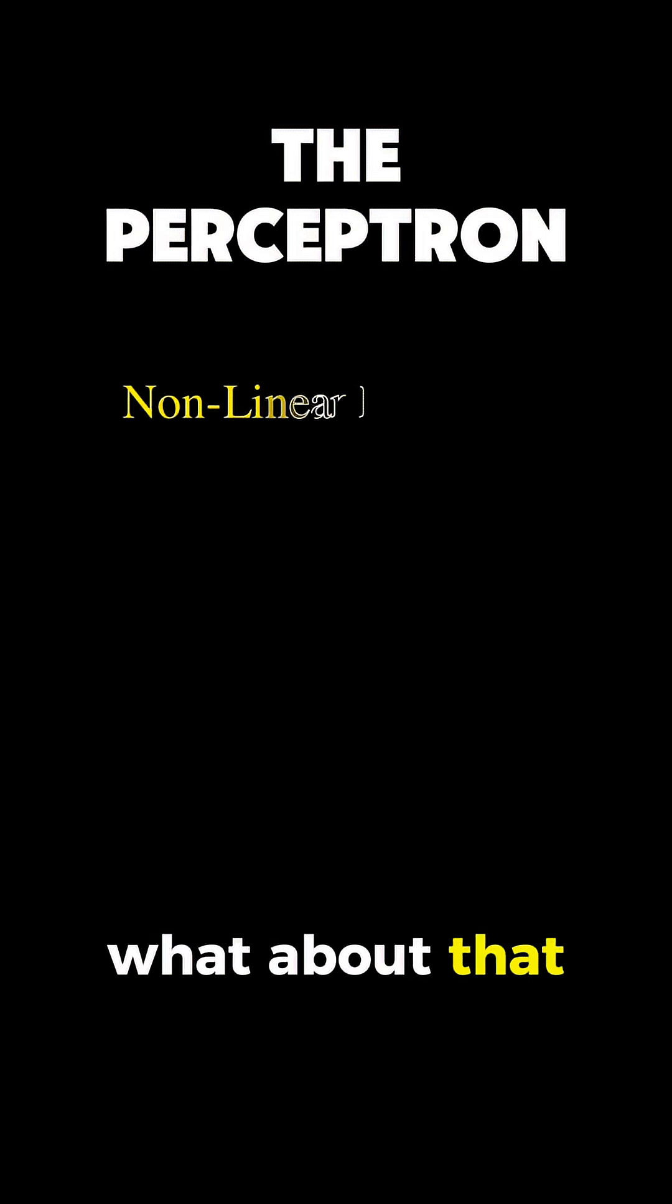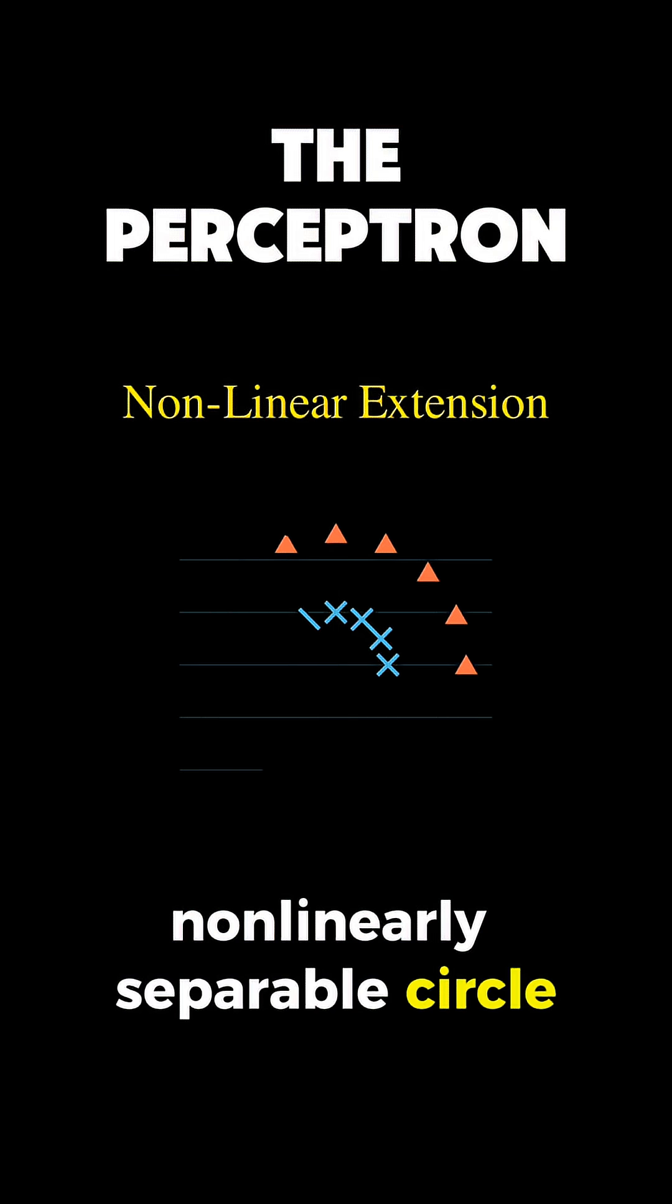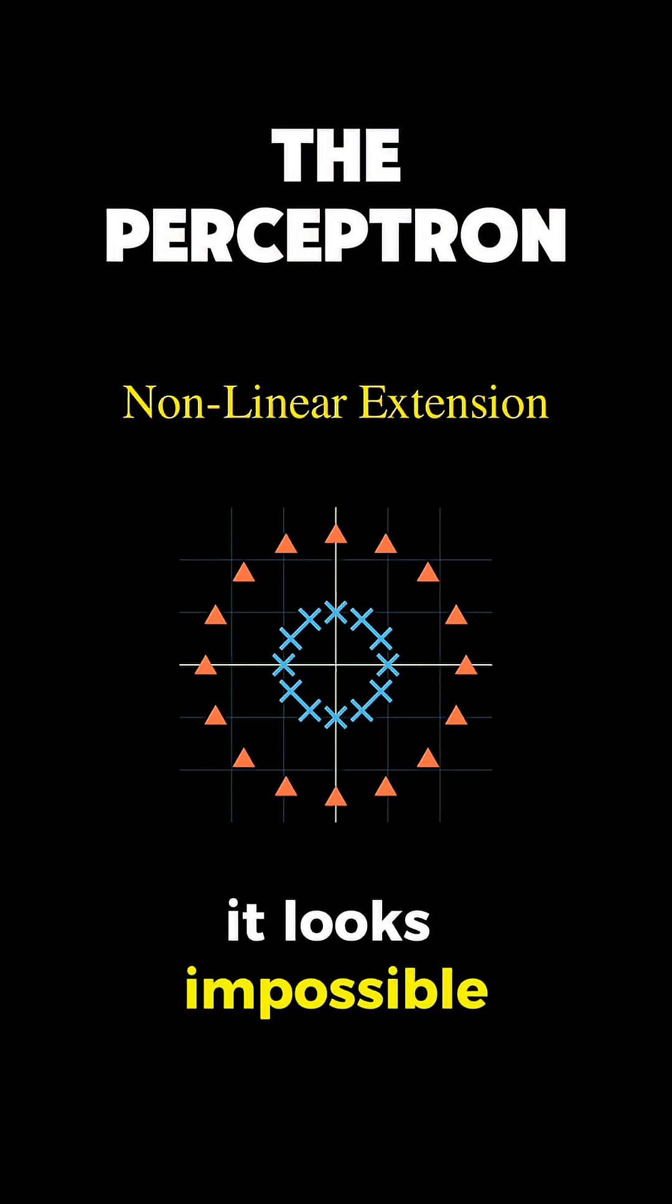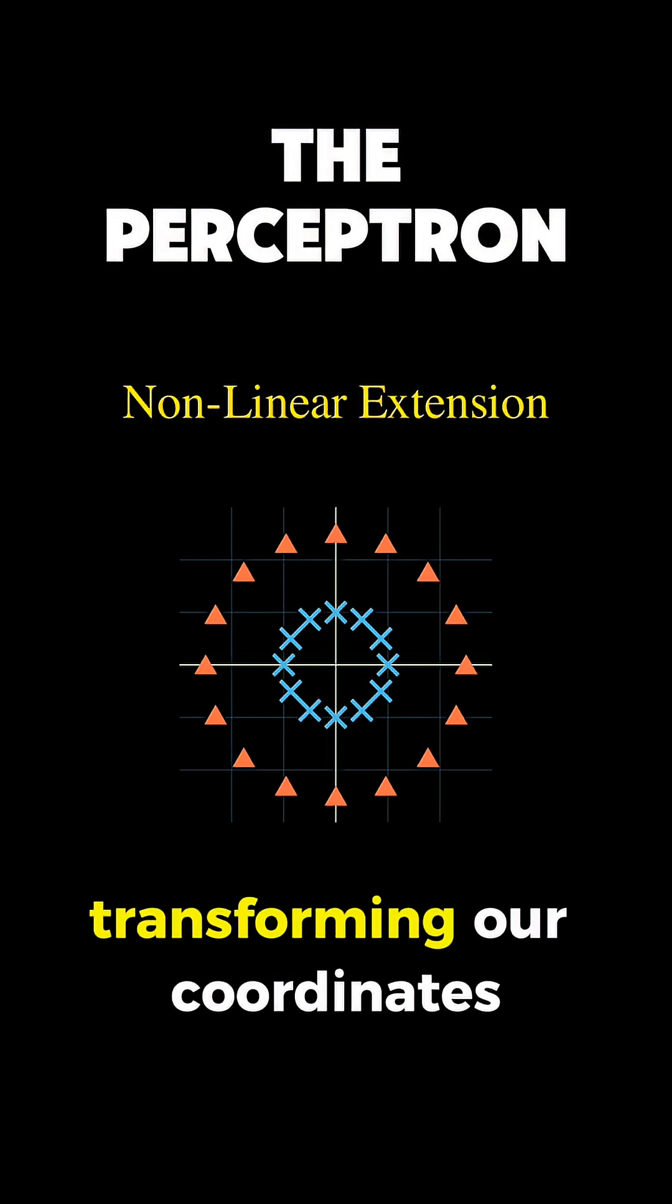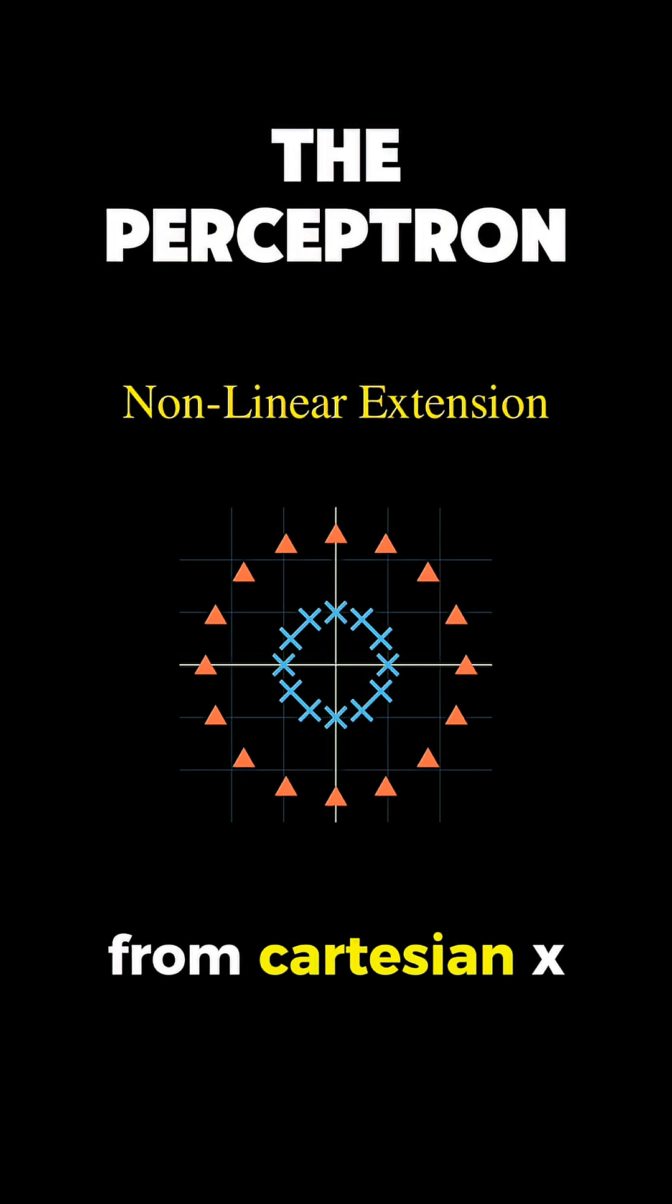Finally, what about that non-linearly separable circle case we saw earlier? It looks impossible for a line separator, but if we change our perspective, transforming our coordinates from Cartesian xy to polar r theta, the data maps to a new space.